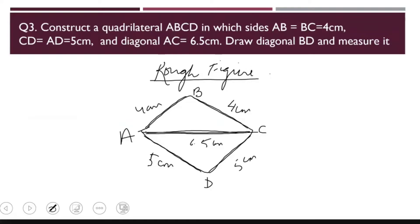Remember, the steps of construction are not asked in the exam. It's not required. But yes, whatever is given and whatever you have to construct and the final statement that hence ABCD is the required quadrilateral and BD is equal to whatever the length comes out to be, that has to be written. That is mandatory. Otherwise, you are going to lose marks. So let us begin the construction.